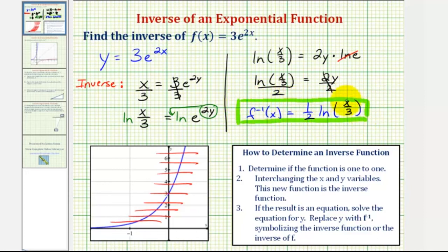But I do want to mention one more thing. Notice how we have natural log of a quotient. So we could apply another log property and write this as a difference of two logs. This is equivalent to f inverse of x equals, now we'd have one half times natural log x minus natural log three. And of course we could also distribute the one half.